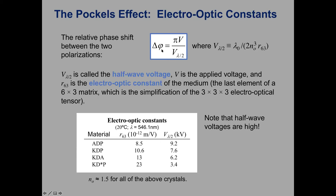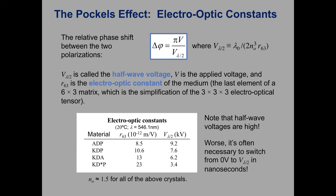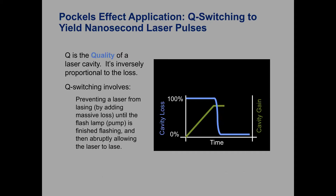One key application of the Pockels effect is in laser physics, specifically to make pulsed lasers. You can use this effect to modify how much light you get out of a laser and create very short pulses of laser light with really high power. The trick is that you need a voltage supply that can oscillate between zero volts and around nine thousand volts on the order of nanoseconds. It's a tough application, but it's done in many commercial pulsed laser systems.